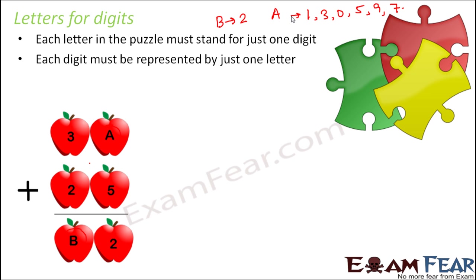Secondly, each digit must be represented by just one letter. So if you are representing digit 2, you should use only one letter like A or B. If you are representing a number like 23, then you should represent it by AB — that is two letters for two digits. So one digit, one letter. A alone cannot represent 10, 125, or 1360. A can only represent one digit.